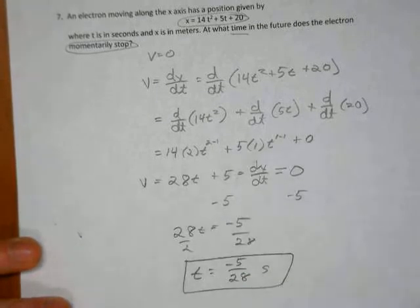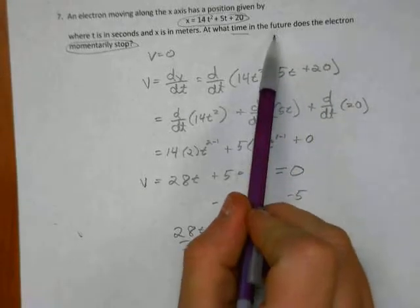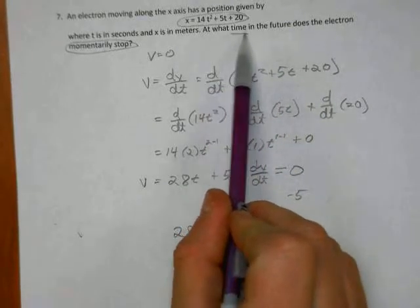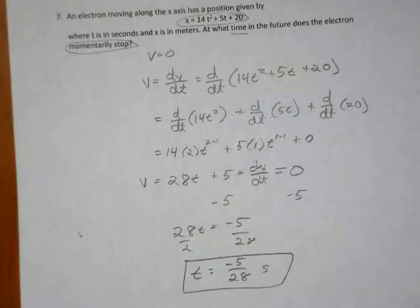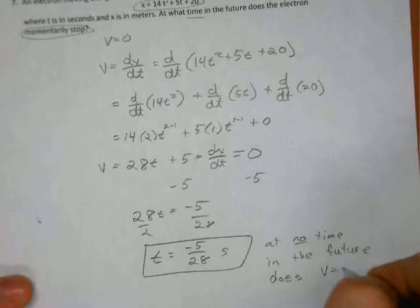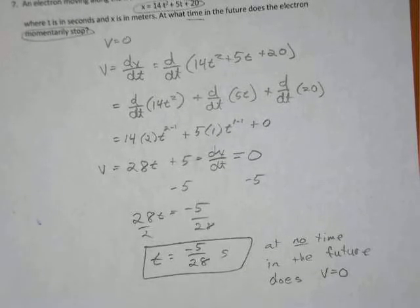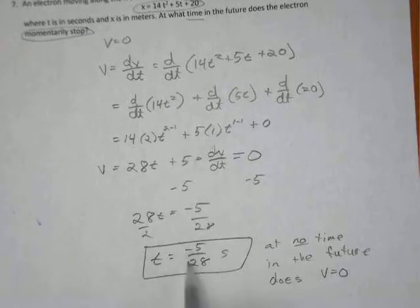How do we get velocity from the position function? Well, you may remember that the velocity equals the derivative of the position function. So v equals dx/dt equals d/dt of 14t squared plus 5t plus 20. If I were to expand that out further, I could say this is in very high detail. So I'm just differentiating each term individually.